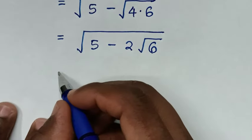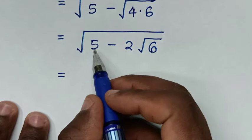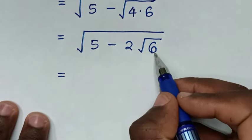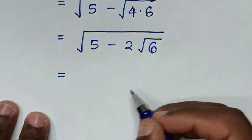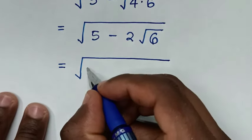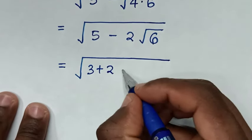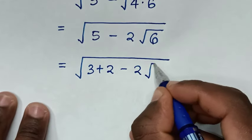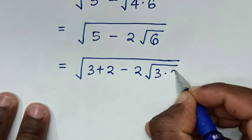Then, in the next step, it will be equal to — now, 5 is the same as 3 plus 2, and 6 is the same as 3 times 2. So it will be square root of 5 is 3 plus 2, then minus 2 times square root of 6, which is the same as square root of 3 times 2.